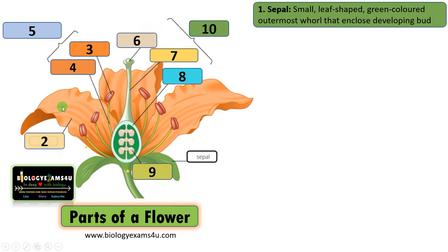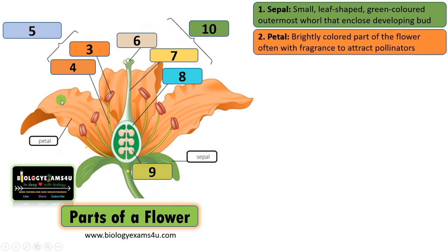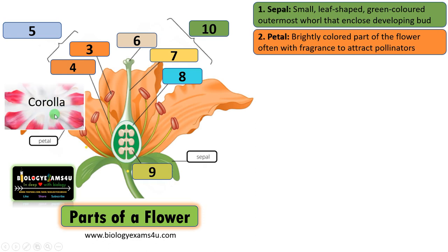The second whorl is called the petal. Petal is the beautifully brightly colored part of the flower, often with fragrance, that is meant to attract pollinators. Group of petals is called the corolla.